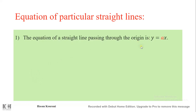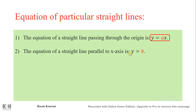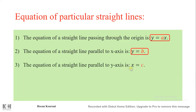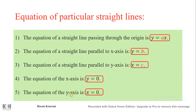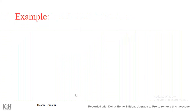Equations of particular straight lines: a line passing through the origin has equation y = ax. A line parallel to the x-axis (horizontal) has equation y = constant. A line parallel to the y-axis (vertical) has equation x = constant. The equation of the x-axis itself is y = 0, and the equation of the y-axis is x = 0.